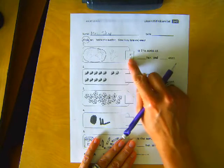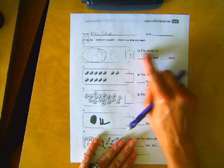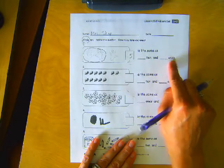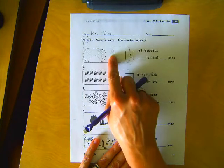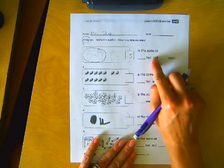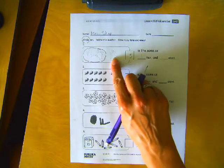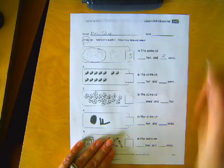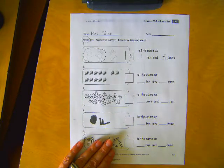So fifteen is the same as blank ten and blank ones. Well, how many tens do we have shown here? We have one ten. And how many extra ones? Five.